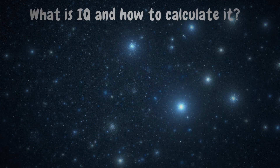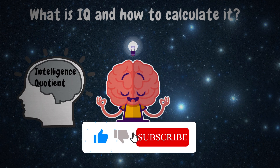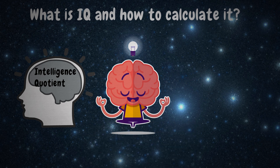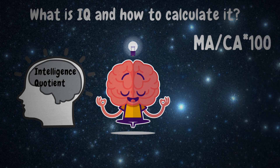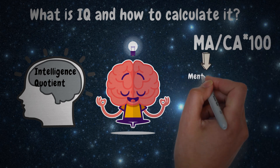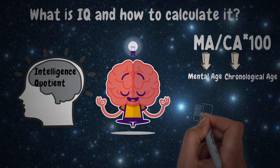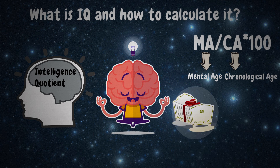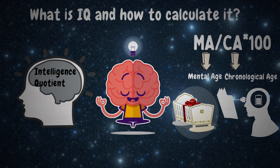IQ stands for intelligence quotient. It's a number that represents the degree of your intelligence. The formula for calculating it is MA divided by CA multiplied by 100, where MA denotes the mental age and CA denotes the chronological age. Your chronological age is your age as of the day you were born, while your mental age can be measured by determining how psychologically mature a person is and how much information he has in relation to his real age.